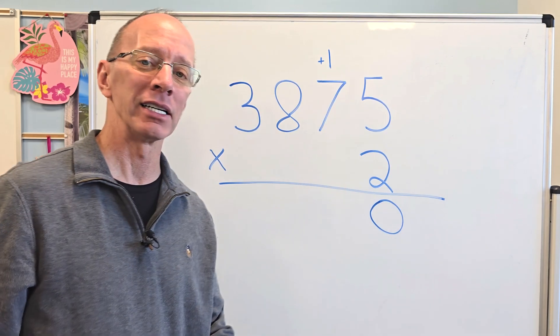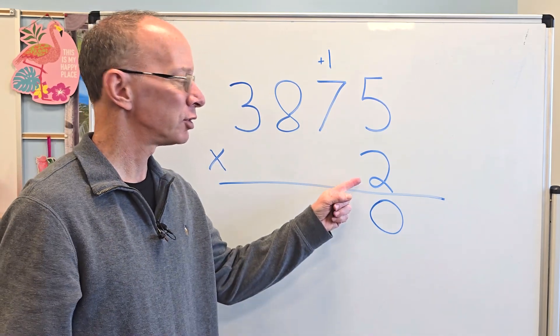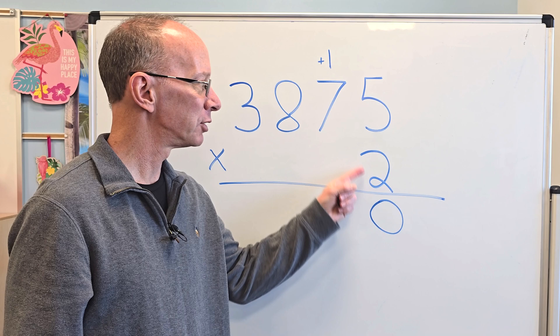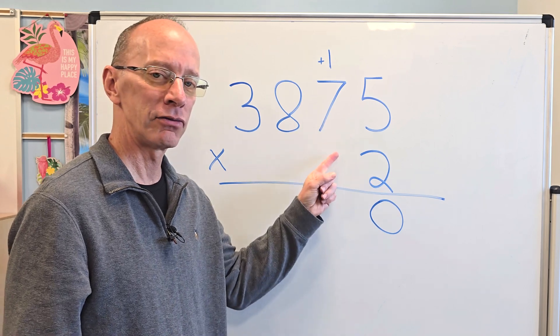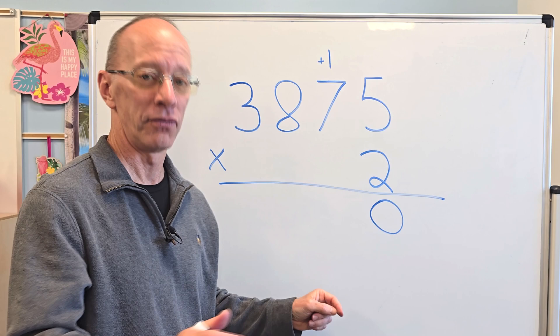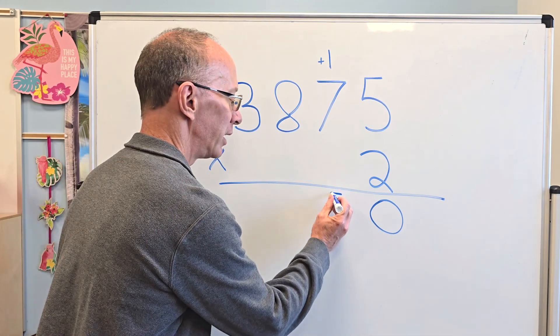Remember, we're going to be adding that 1 in a little bit. Let's work on the next number. We're going to take 2 times 7. 2 times 7, 14. Oh, we're not done yet. Plus the 1, 15. So I put the 5 right here.